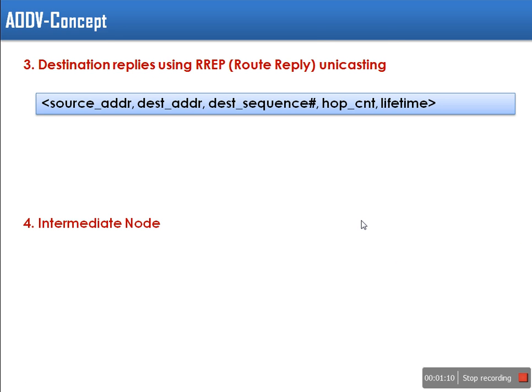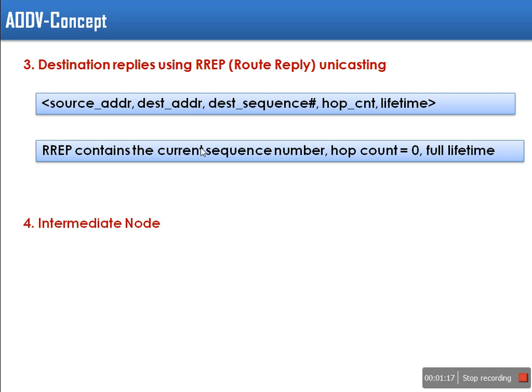When the destination receives the route request packet, the destination replies to the source with a route reply packet. These are the contents of the route reply packet.